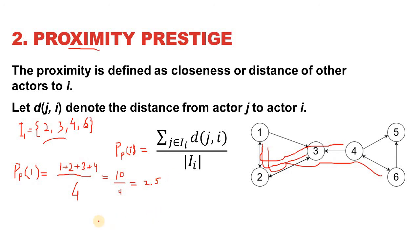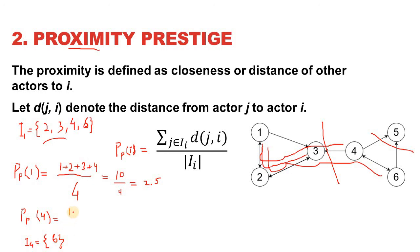We can calculate proximity prestige for all nodes this way. For node 4, we find I(4) — nodes that can reach node 4. Half the graph cannot reach 4, and node 5 cannot reach 4 either, so only node 6 can. Node 6 can reach 4 in a single step, so that is 1 divided by 1, giving a value of 1. These prestige-based techniques are more stable than centrality-based approaches and cannot be easily manipulated, requiring more genuine effort to build in-links.